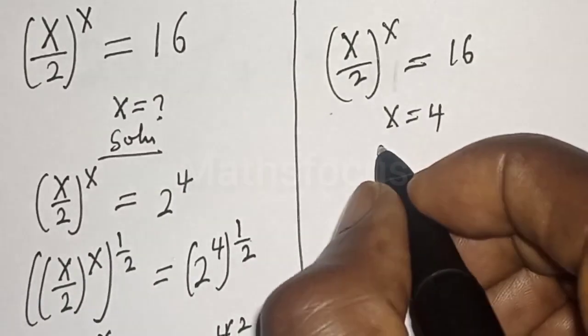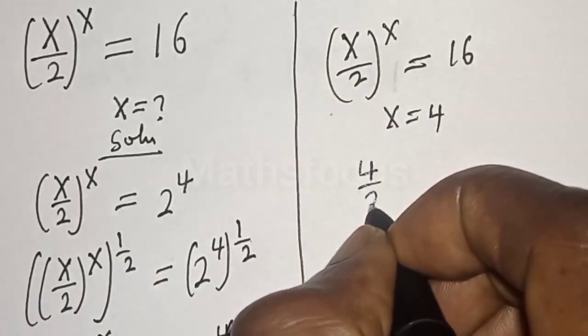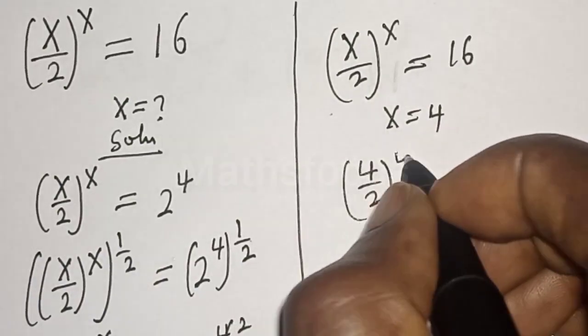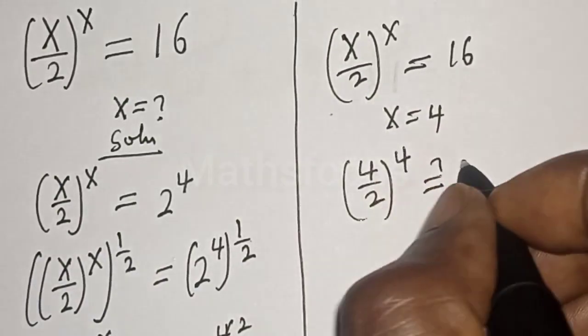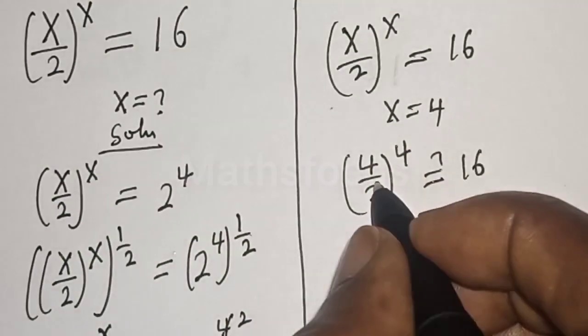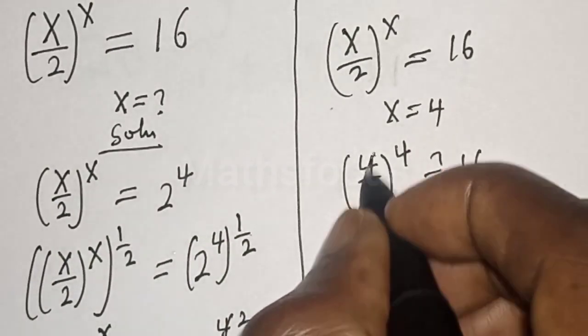This is 4 over 2 to the power of 4 must be equal to 16. 2 here 1, 2 here 2.